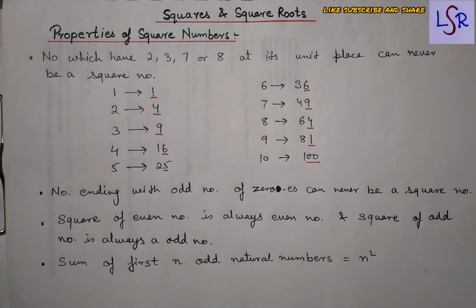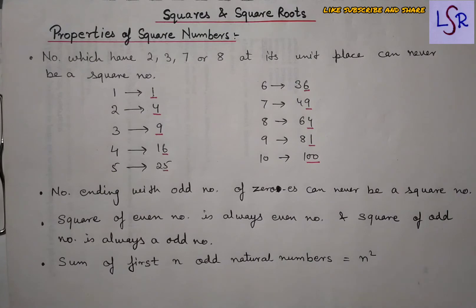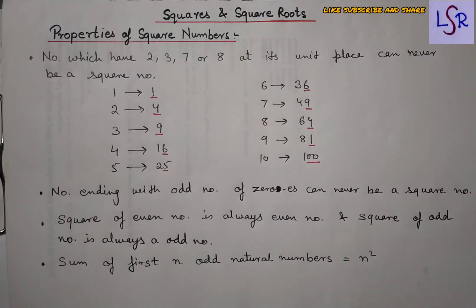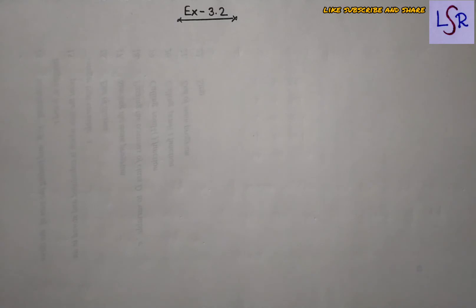The next property: the sum of the first n odd natural numbers equals n². Starting from 1, 3, 5, 7, and so on, you just count the number of terms taken. For example, taking 1, 3, and 5 gives three terms, so the sum is 3²=9. There's no need to actually add the numbers — just square the count of terms. That's all for the properties portion.